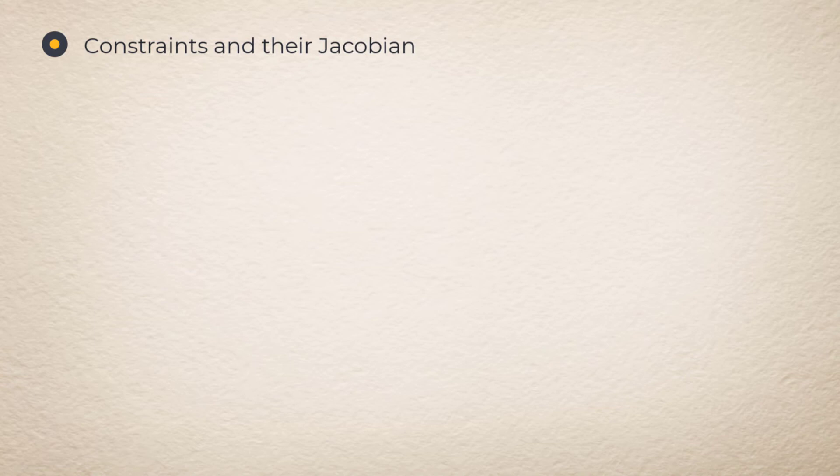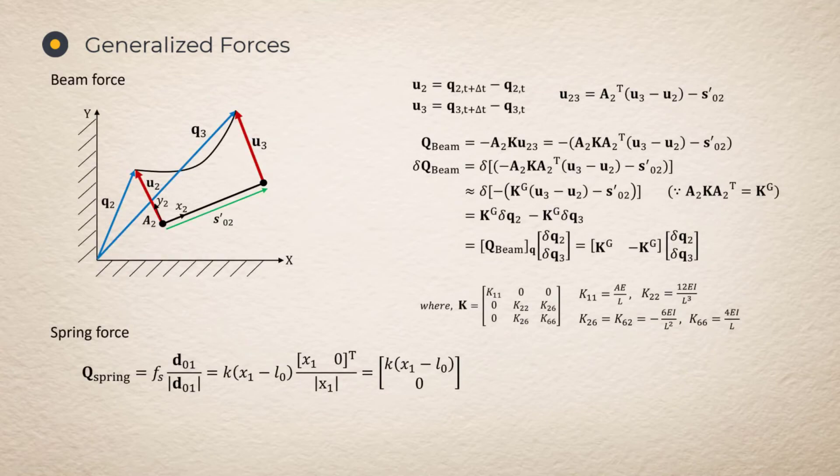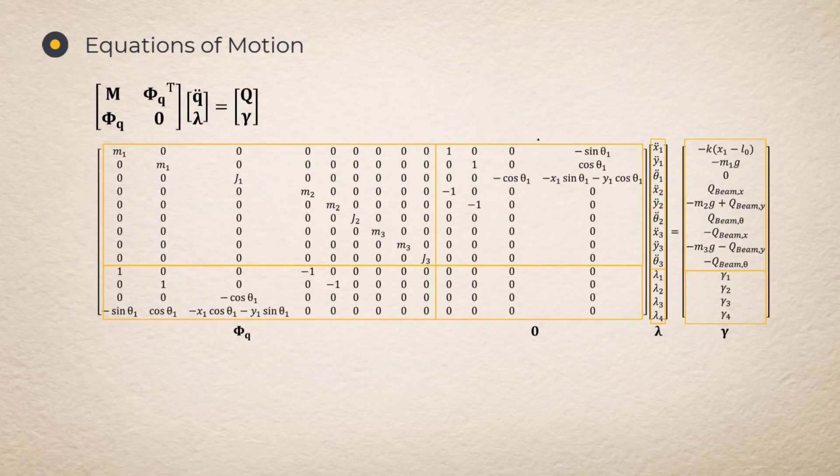Constraint and D Jacobian. The constraint equations of the system and D Jacobian matrices are obtained as follows. Generalized Forces. The generalized forces of the spring and beam are obtained as follows. Equation of Motion. The Equation of Motion are obtained as follows. Right-hand side of Equation of Motion. The right-hand side of the Equation of Motion is obtained as follows.